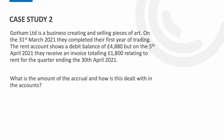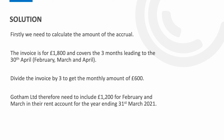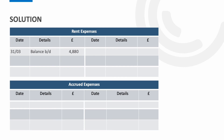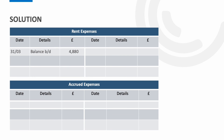The question is: what is the amount of the accrual and how is it dealt with in the accounts? We need to calculate the amount to be accrued. The invoice for £1,800 covers three months leading to the 30th of April — February, March and April. Dividing £1,800 by three gives a monthly amount of £600. The business therefore needs to include £1,200 for February and March in the rent account for the year end of 31st March. April is excluded as it falls into the next year's accounts.